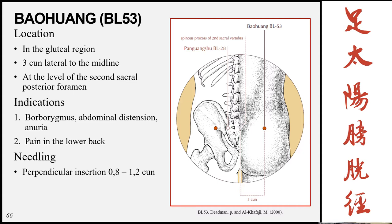The next point is Baohuang, Bladder 53, located in the gluteal region, three cun lateral to the midline at the second sacral posterior foramen. Note that the first sacral foramen is skipped — there is no point lateral to it. Indications include borborygmus, abdominal distension, anuria, and pain of the lower back. Insertion is perpendicular 0.8 to 1.2 cun.